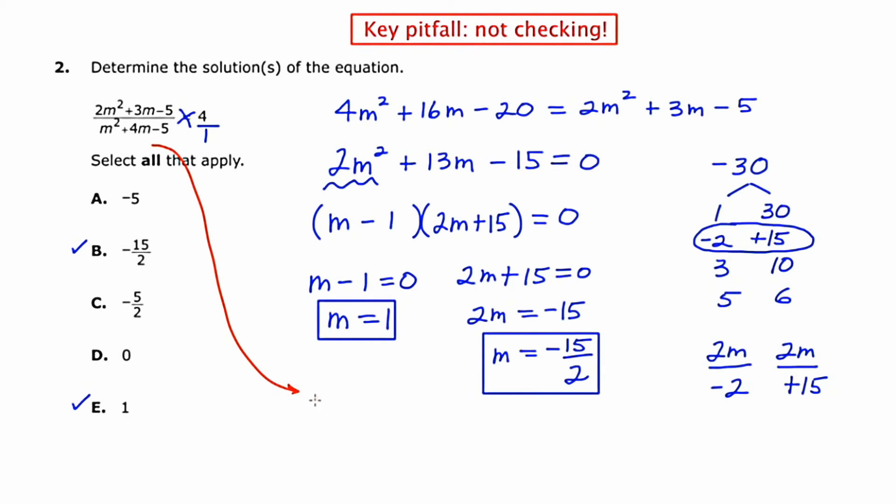If I were to plug 1 in, I would get 1 squared plus 4 times 1 minus 5. Or 1 plus 4 minus 5. And this is going to equal zero. And you can't ever have zero in the denominator. So this is what we would call an extraneous solution. So therefore, the only answer that I would actually pick here is negative 15 halves.